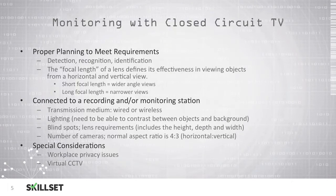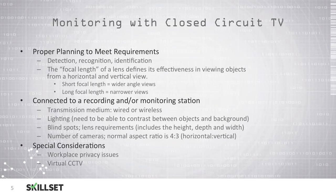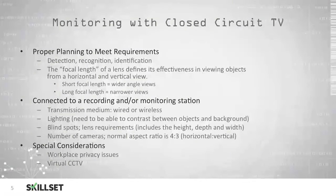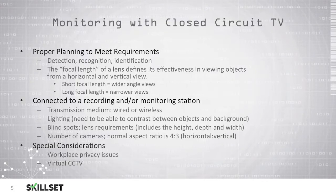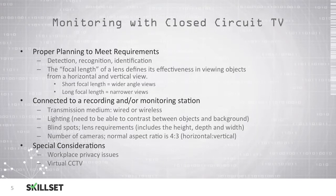You should have proper lighting in the area that you are attempting to record because you will need to be able to tell the difference between objects and background. If you do not have proper lighting, you can use LED cameras to increase the lighting in the area. You should also be aware of blind spots and lens requirements, and make sure that you do not allow blind spots to occur, because if individuals learn where there is a blind spot they may be able to attack in that area without being captured on tape. You should also consider the number of cameras that you will use as well as the aspect ratio. The most common cameras use a 4-to-3 horizontal to vertical aspect ratio, although there are different types of cameras available for special use cases.